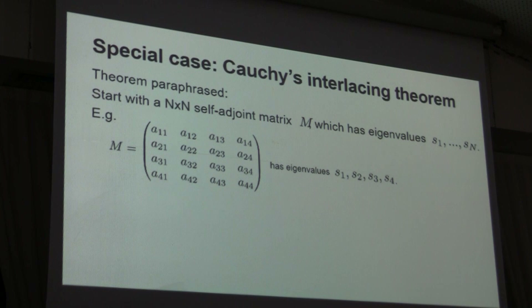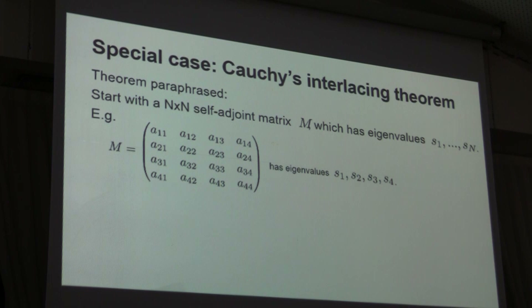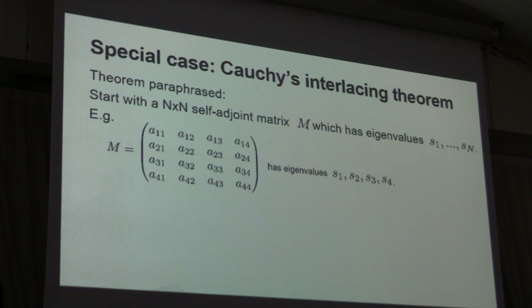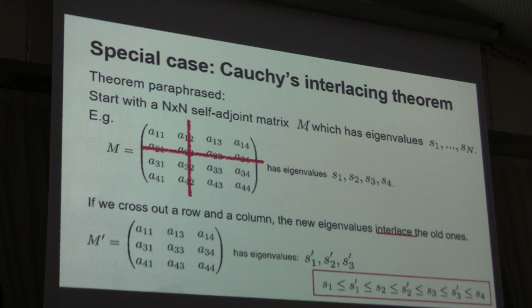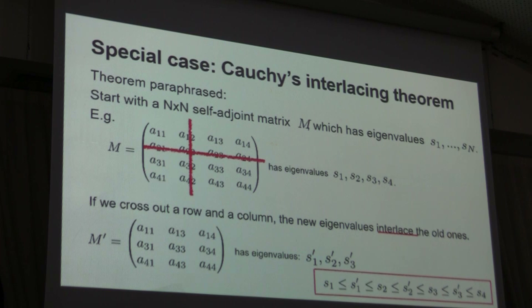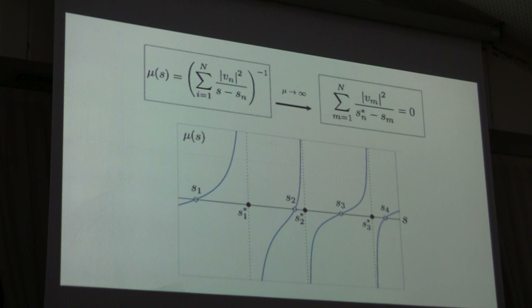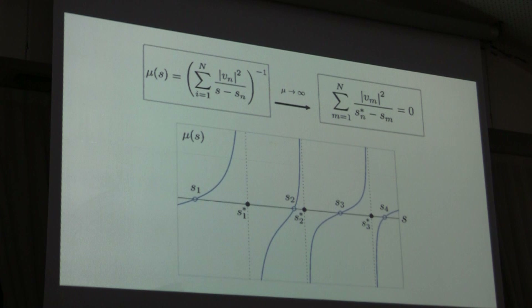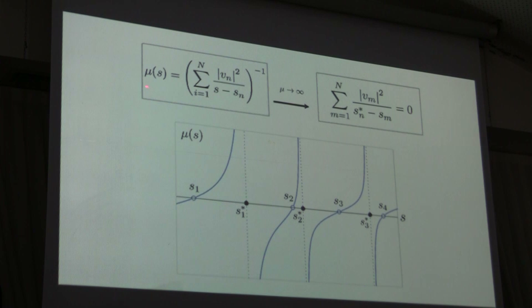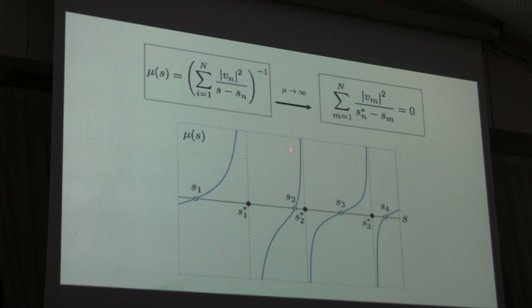One special piece of Newton's Cradle spectra is Cauchy's interlacing theorem — an old theorem named after Cauchy. It tells you that if you start out with some n-by-n self-adjoint matrix with eigenvalues S1, S2, S3, S4, and then cross out a row and a column to make a new matrix, the new eigenvalues interlace the old eigenvalues. Using our formulas, we can see what's happening here. When we send the coupling constant mu to plus or minus infinity, the subspace corresponding to the projector just decouples from the Hilbert space. Setting mu equal to infinity in our formula gives you exactly the Cauchy interlaced eigenvalues — those are the asymptotes that the spectrum approaches as you send the coupling constant to infinity.